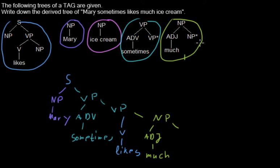And in this tree, well, it's a little bit complicated. We will have substituted ice cream into that node. So we would have this node here, but then we would adjoin into that node.